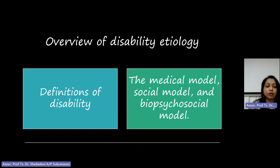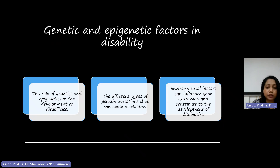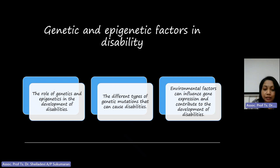Environmental and medical factors are among the key reasons for disability. Environmental factors, especially prenatal ones such as maternal exposure to toxins, infection, or malnutrition, can have a significant impact on fetal development and increase the risk of disabilities. Postnatal factors such as accidents, injuries, and exposure to harmful substances can also contribute to the development of disabilities.